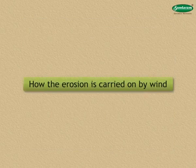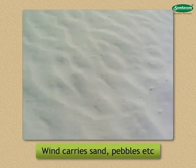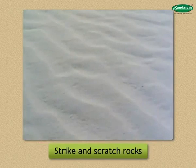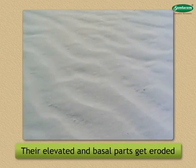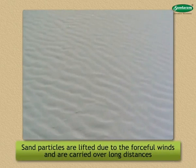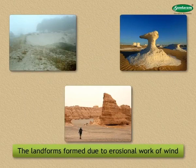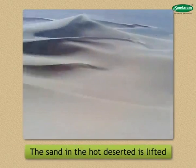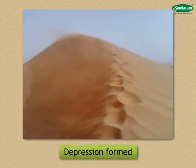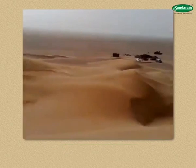Let us see how erosion is carried on by wind. Wind carries sand, pebbles, etc. As they strike and scratch the rocks, their elevated and basal parts get eroded. At times, sand particles are lifted due to forceful winds and are carried over long distances. First, Deflation hollows: the sand in hot deserts is lifted and carried away over long distances by wind. A depression is formed in the area from where the sand is carried away. Such depressions are called deflation hollows.